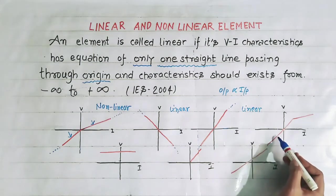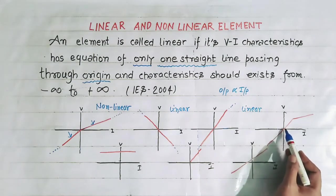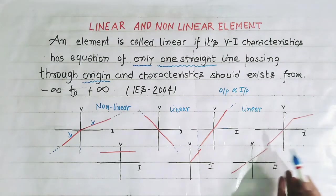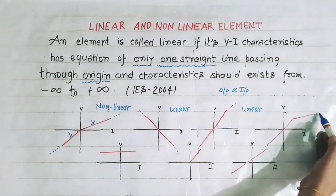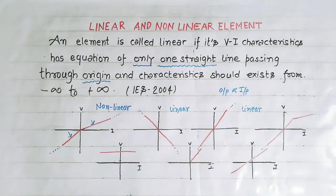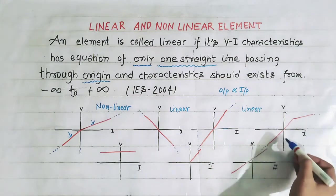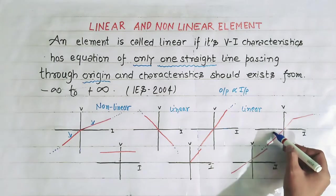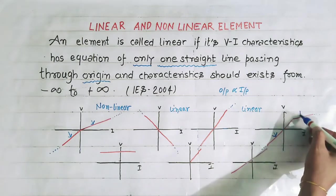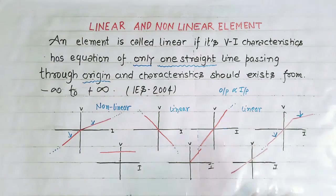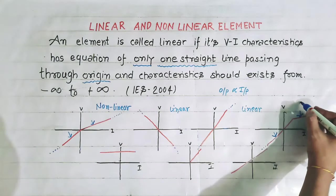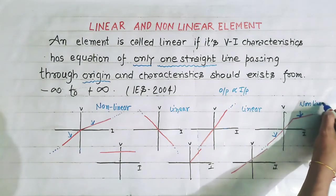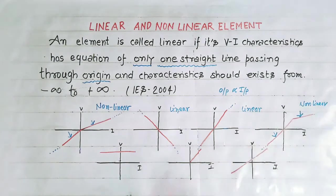Now see this — this line is passing through origin and the characteristic is extended from minus infinity to plus infinity, but this characteristic has two different equations of straight lines. That's why it is nonlinear.